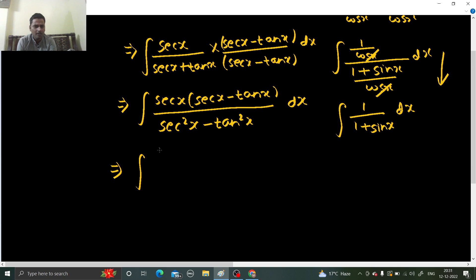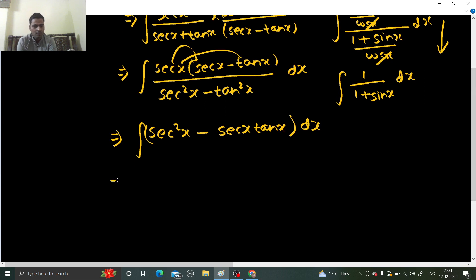So we will have to think about numerator only. If you multiply this inside, so you get secant square x minus secant x tan x. Now both of them integral we know. So just separate and integrate. So secant square x dx minus integral of secant x tan x dx.